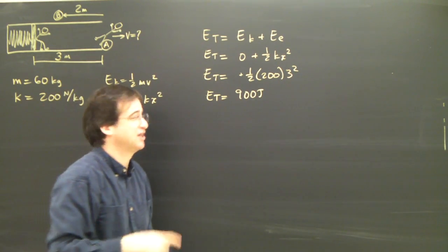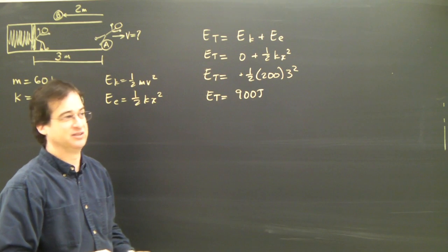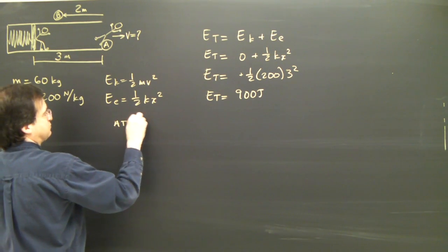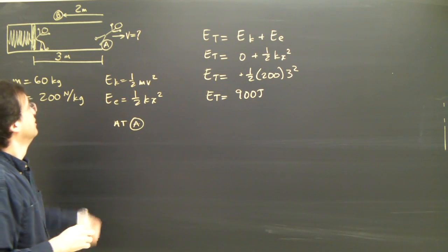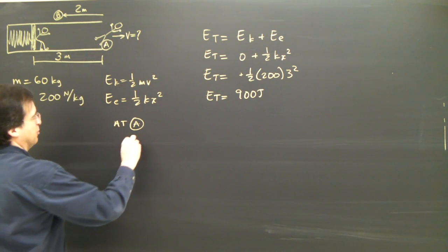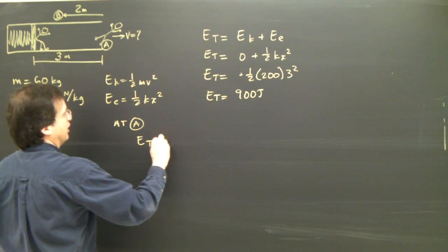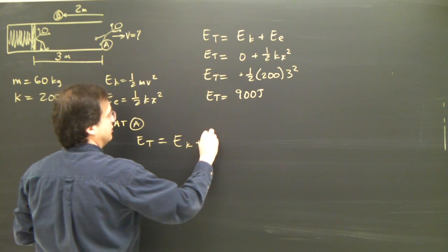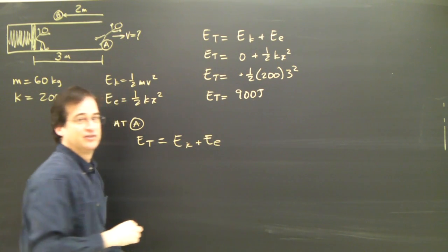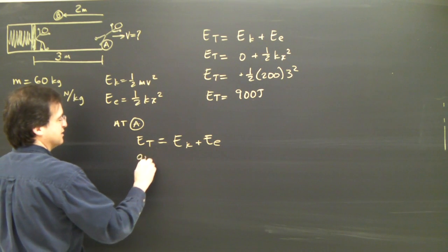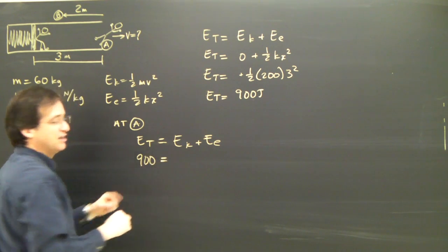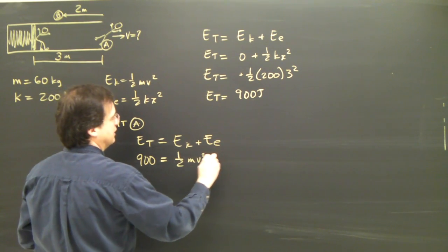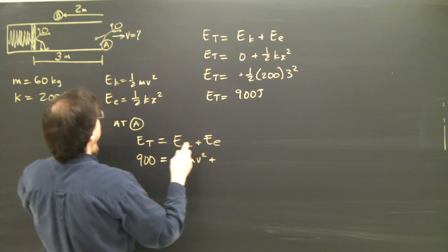Once I know the total energy that's very powerful. It means I can find out things anywhere in the system. So let's look at A. At A I know that I've got different types of energy and I'm going to write down my formula. The total energy, well in this whole system I'm dealing with the kinetic energy and the elastic energy. I know what the total is. It's 900 joules.